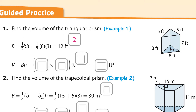Then the volume is the base area, which is what we just found — 12 — times the height of the prism. The height of the prism is the 7; it's the distance between the two triangles. The triangles are the bases, so that should be a 7.